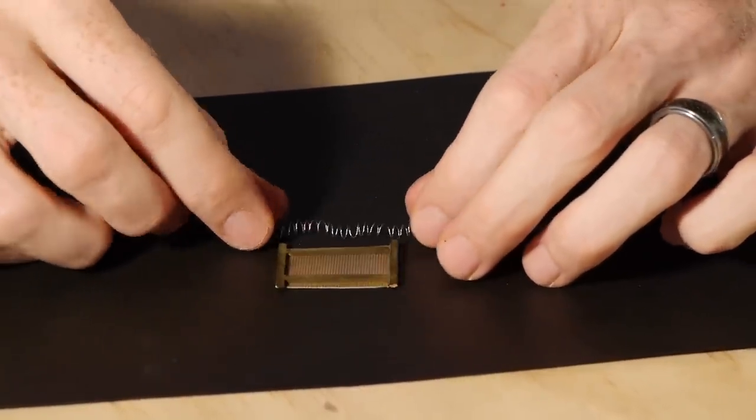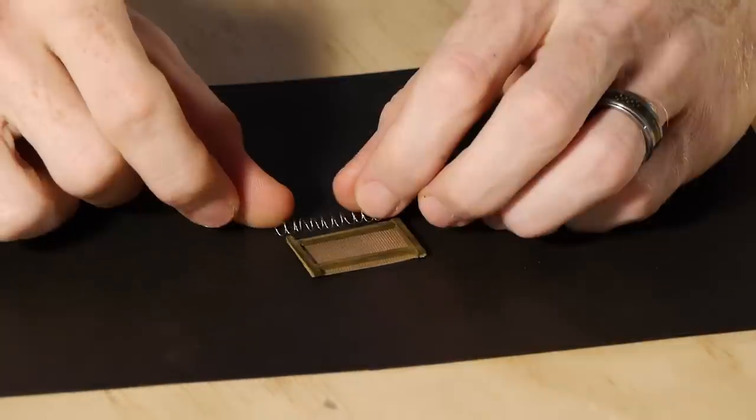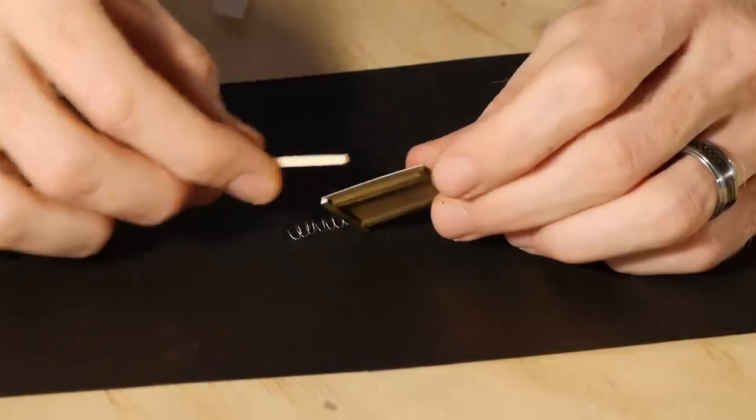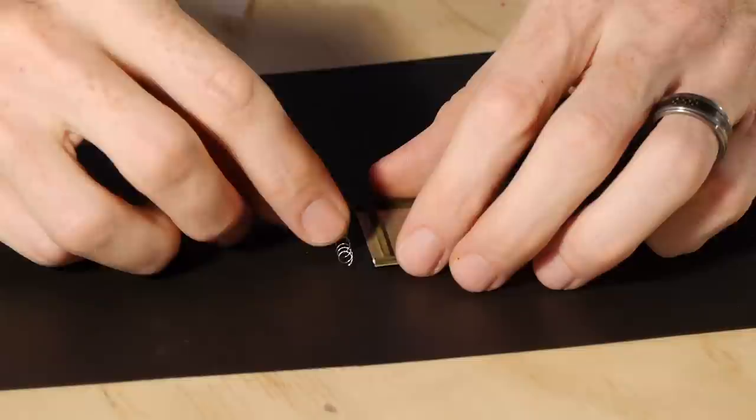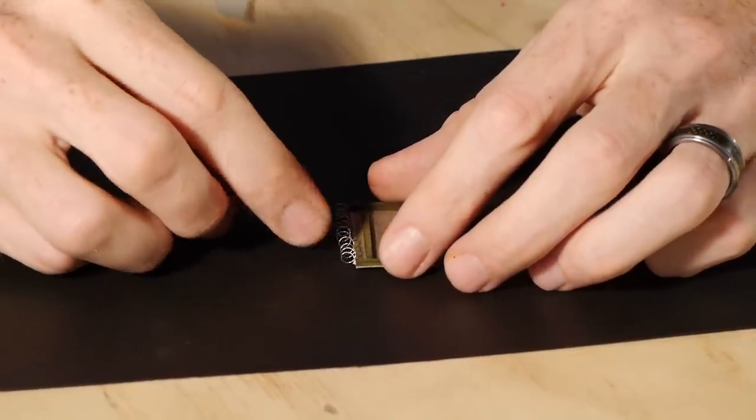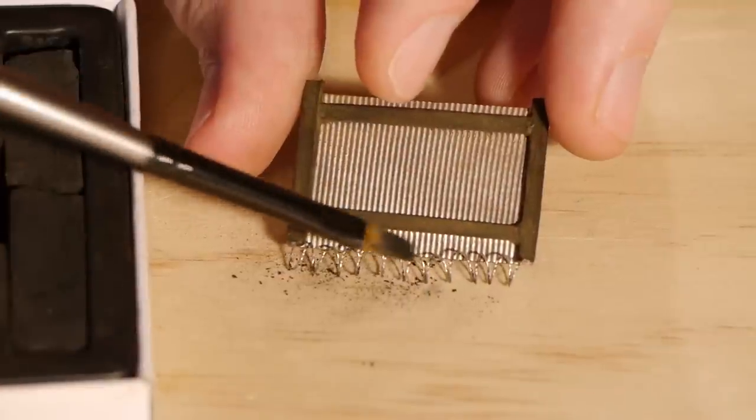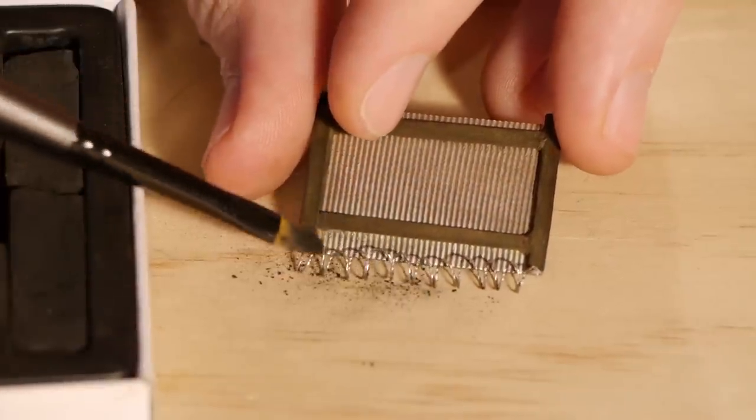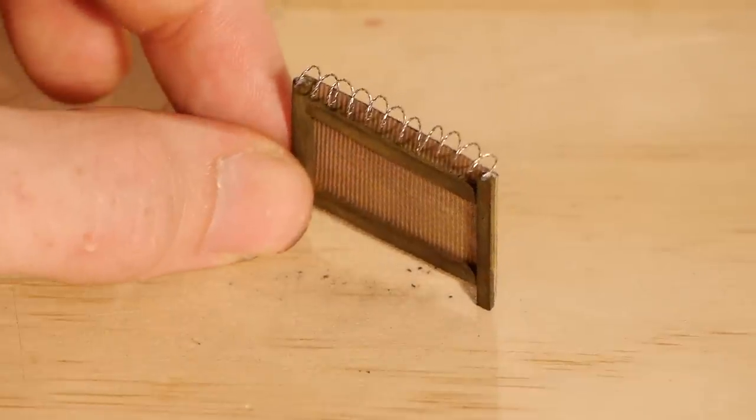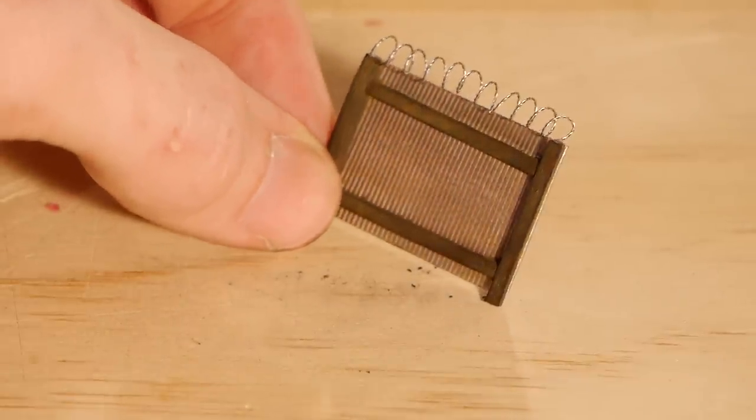Now that it's coiled, you can stretch it out a little and trim it to the length you desire. Again, simply glue it to the top of the fence. For a subtle effect, I'll lightly dust the wire with black pastel.